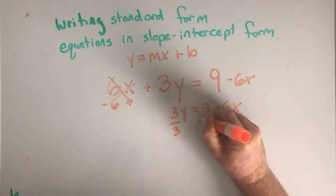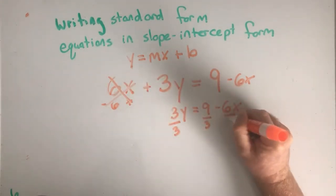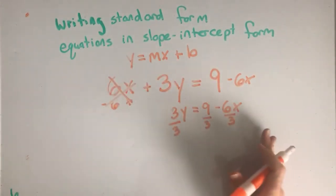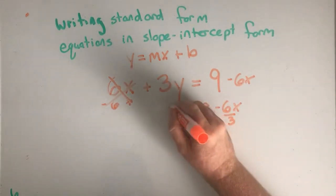So I'm going to divide by 3. Divide by 3. Divide by 3. You have to do it to everything. So that cancels.